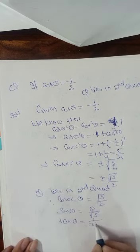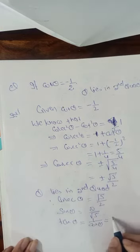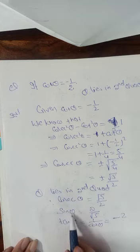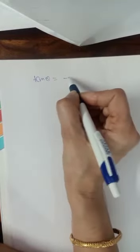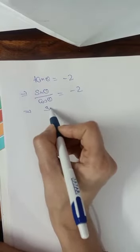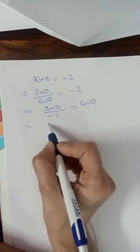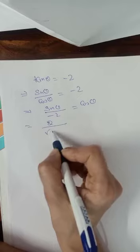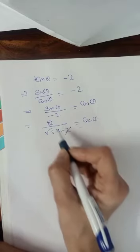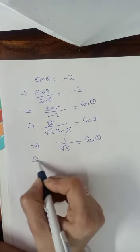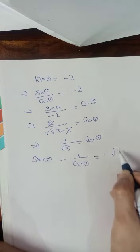tan θ = 1/cot θ = 1/(−1/2) = −2, which is negative in the second quadrant. To find cos θ: tan θ = sin θ / cos θ, so −2 = (2/√5) / cos θ, which gives cos θ = (2/√5) / (−2) = −1/√5. And sec θ = 1/cos θ = −√5. In the second quadrant, sec is also negative, consistent with cos being negative.